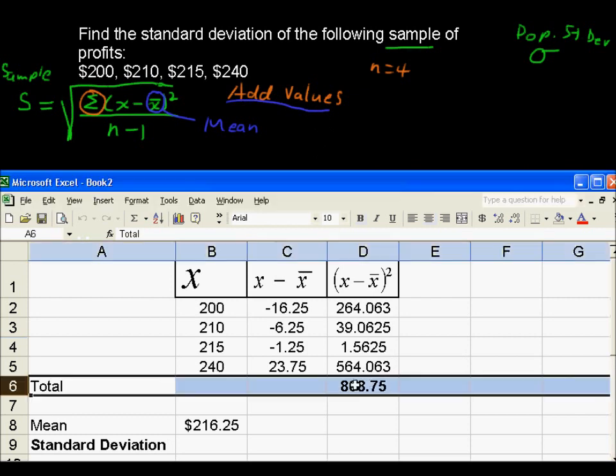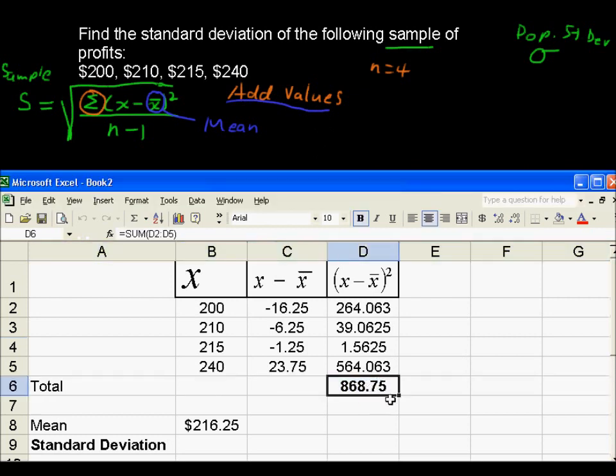And this is what we were doing up here. We were adding these values. So that's this value right here. The total of x minus x-bar quantity squared. Now let's plug this into the formula.